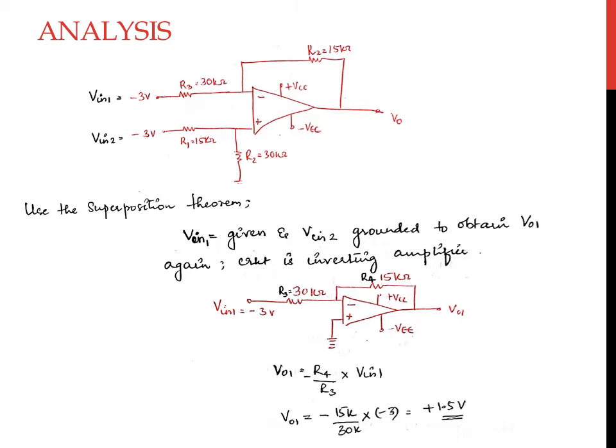First, we apply input voltage Vin1 while Vin2 is grounded to obtain Vout1. The equivalent circuit is an inverting amplifier circuit and we obtain Vout1 equal to plus 1.5 volts. Note that the input voltage is the carrier voltage which can be either positive or negative 3 volts. We used a negative carrier of minus 3 volts to obtain a positive output voltage of 1.5 volts, showing the output is inverted with respect to the carrier.